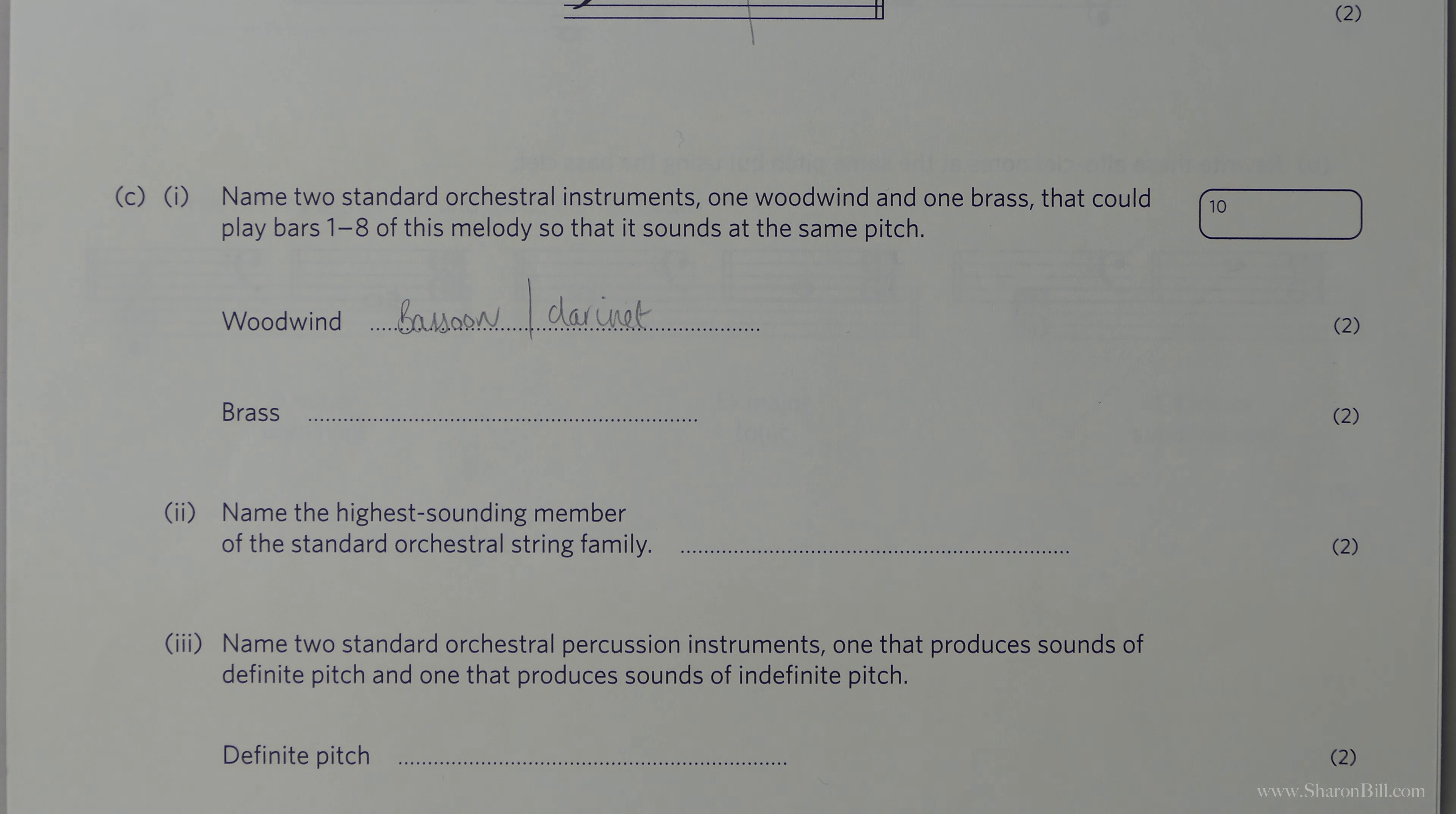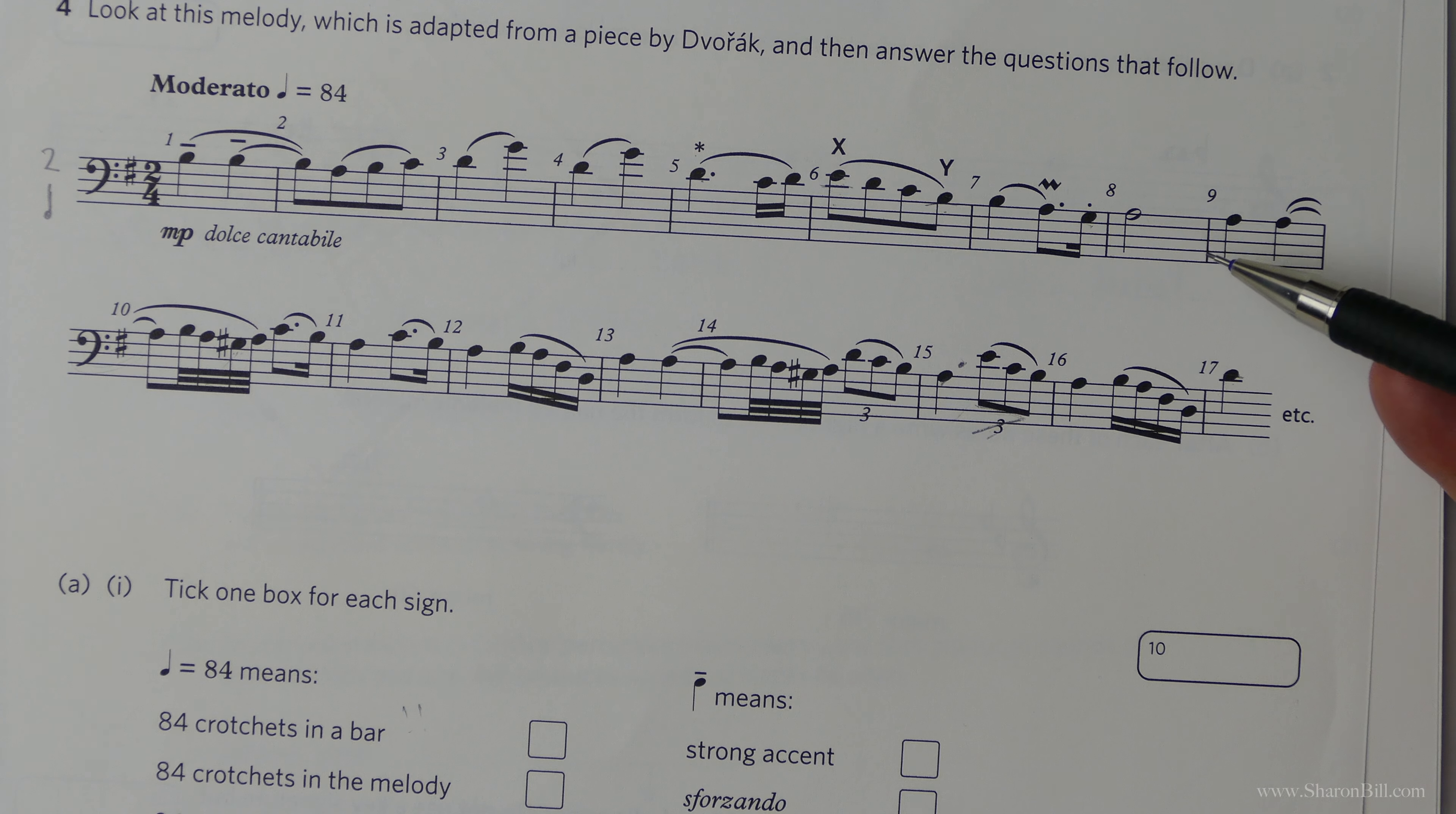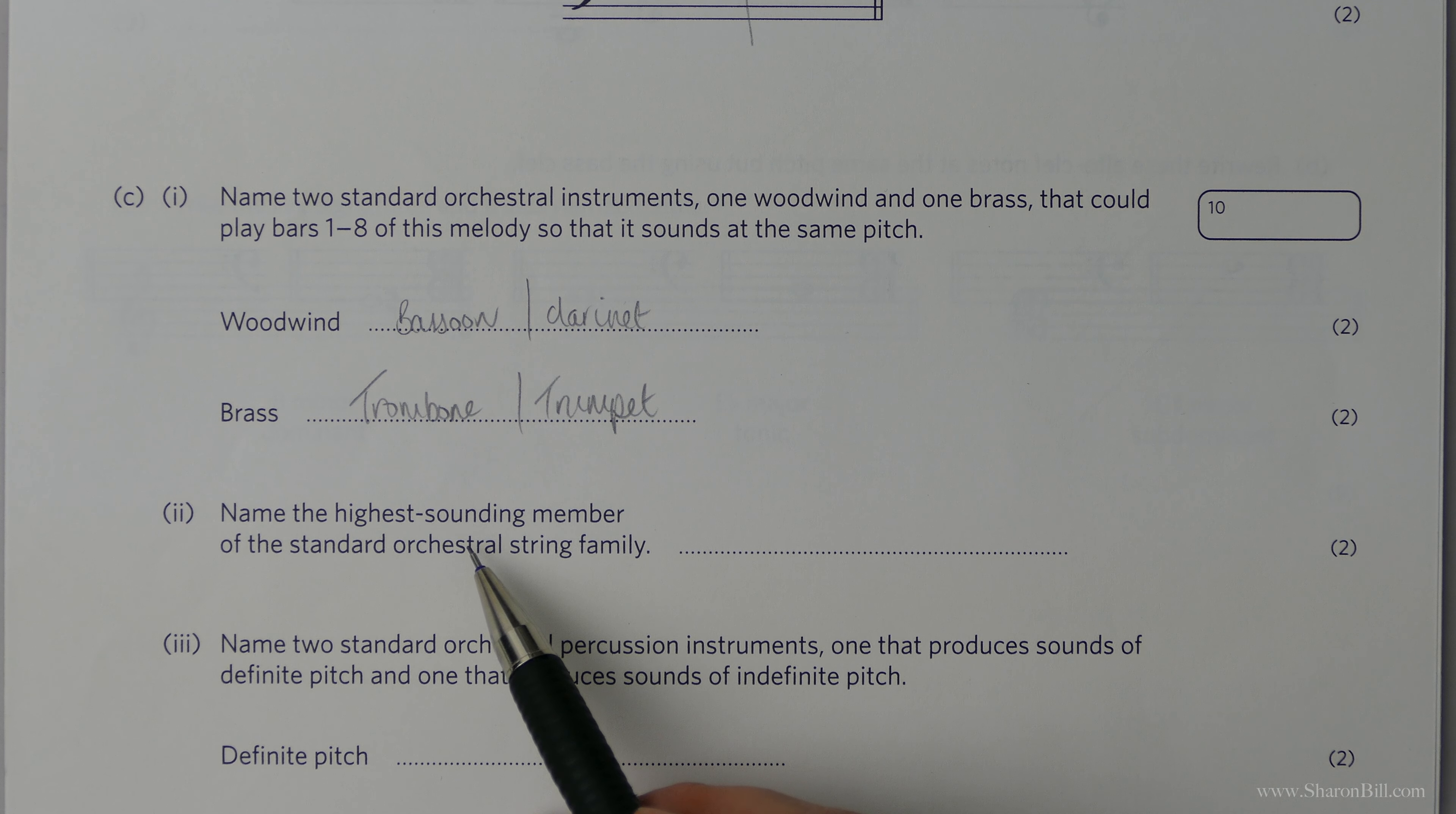And then the brass, the trombone is our first choice for that range. And actually, I think you'll find that the trumpet can actually get this low as well. So I guess you could put trumpet as well. But trombone is your first choice, I would suggest. So now, just generally speaking, what's the highest sounding member of the string family in the orchestra? Violin.